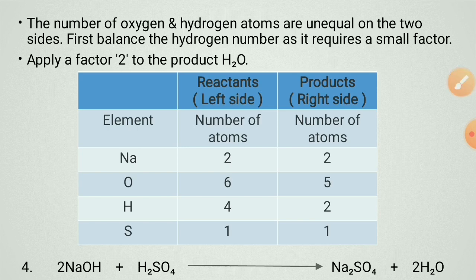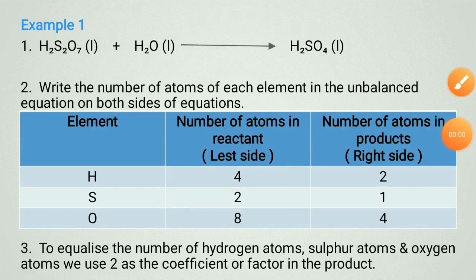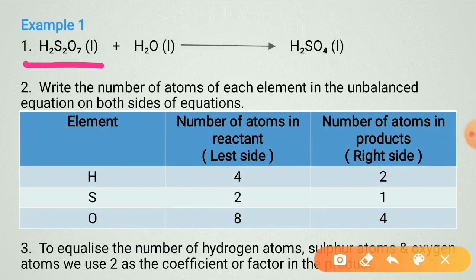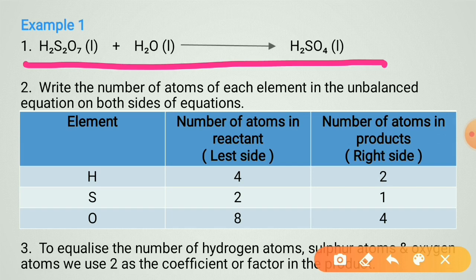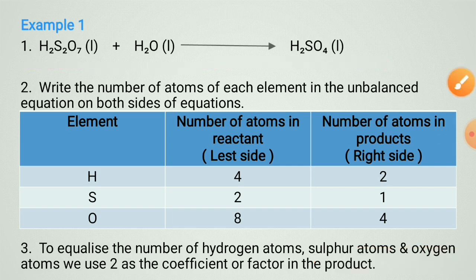You have to write these steps when asked to balance the equation with the steps shown. Now consider an example. The given equation is unbalanced, so write down the elements and count atoms: hydrogen is four in the reactant and two in the product; sulfur is two in the reactant and one in the product; oxygen is eight in the reactant and four in the product.